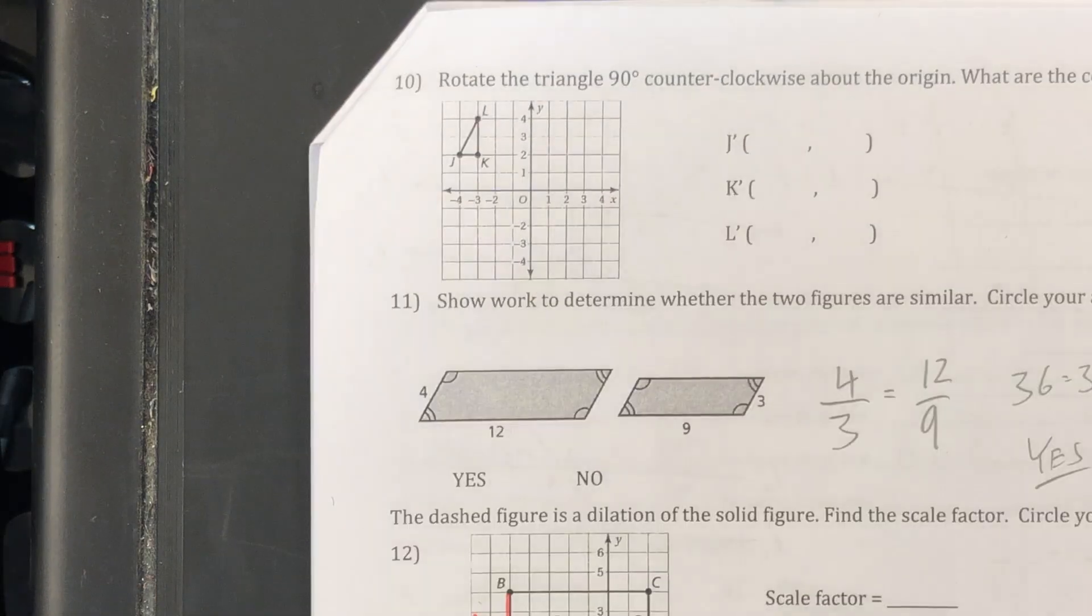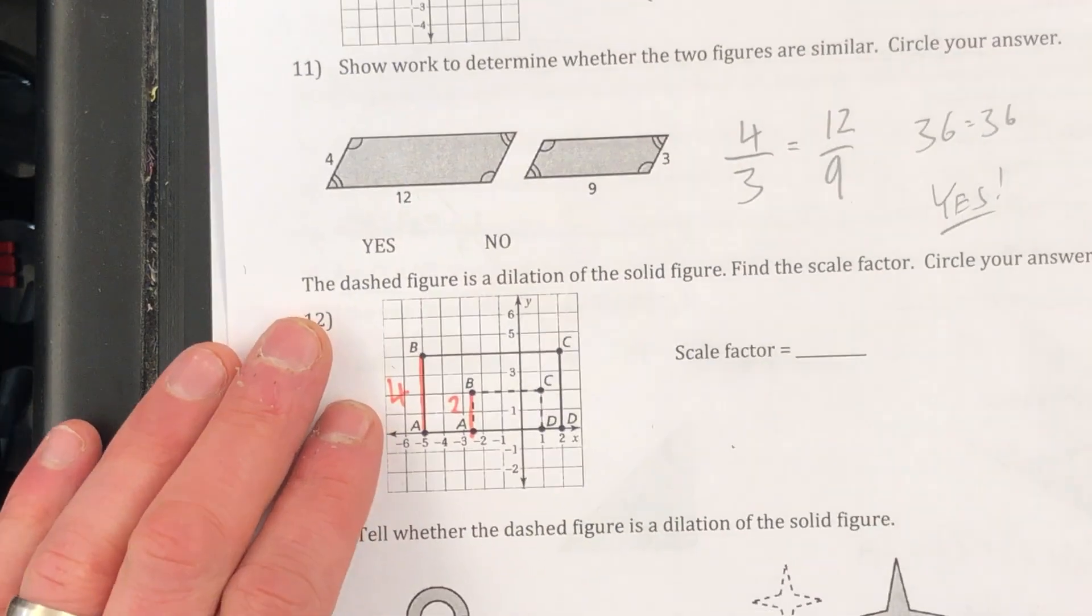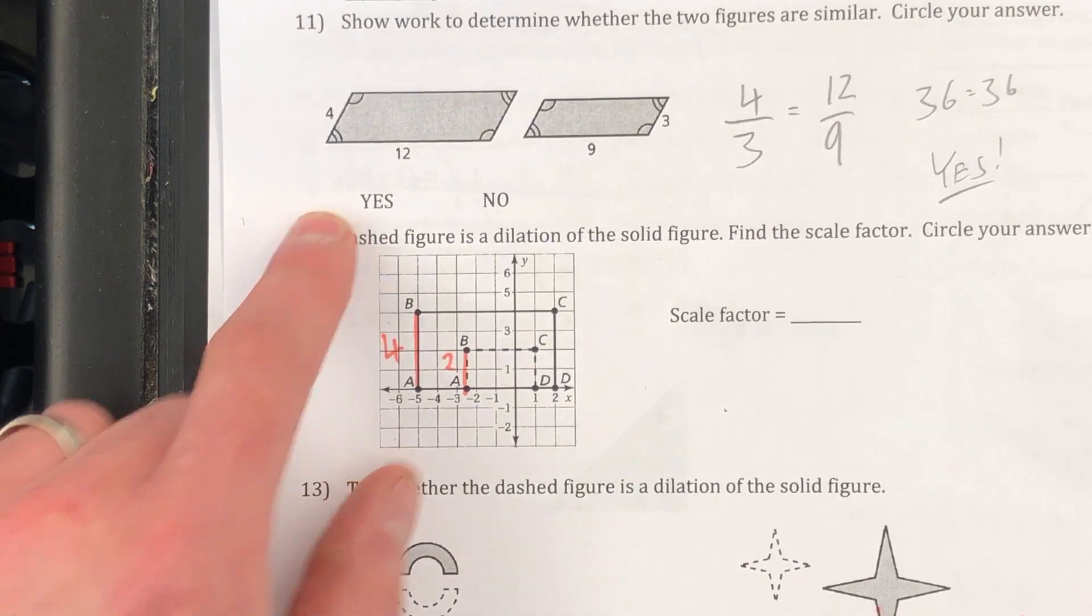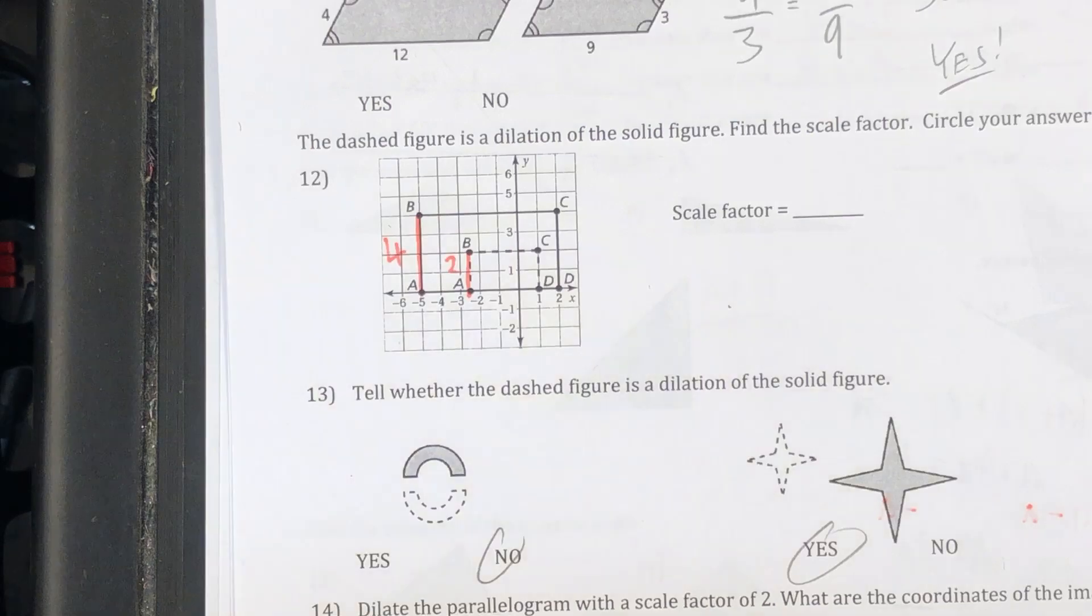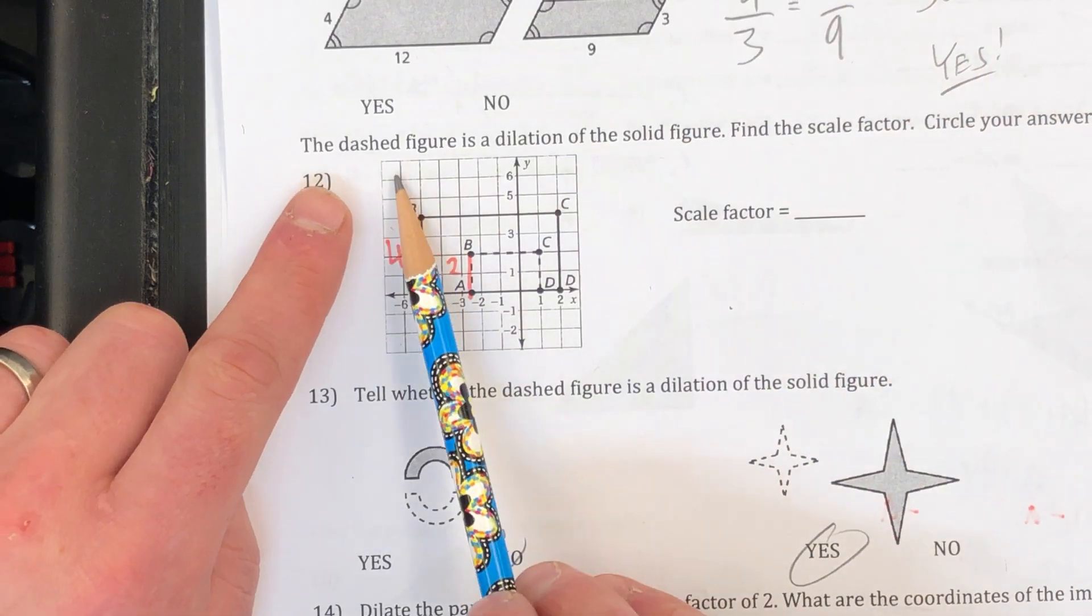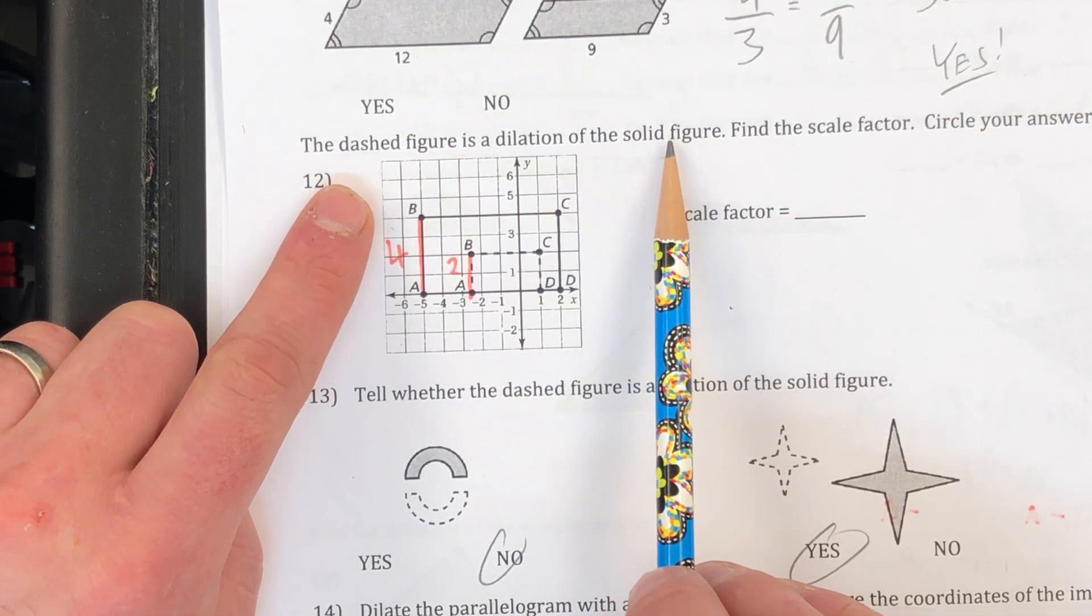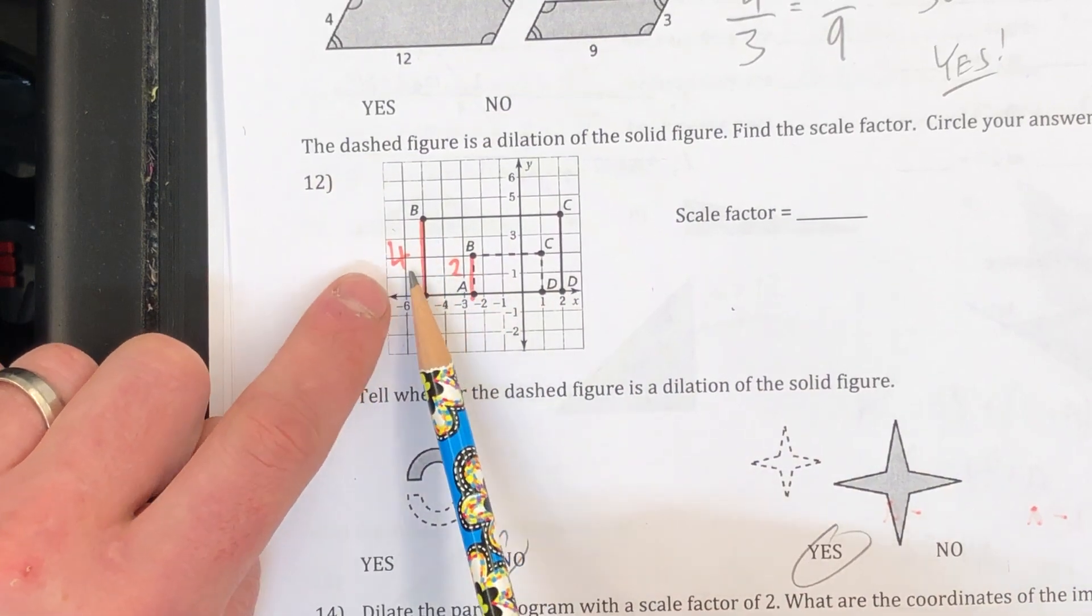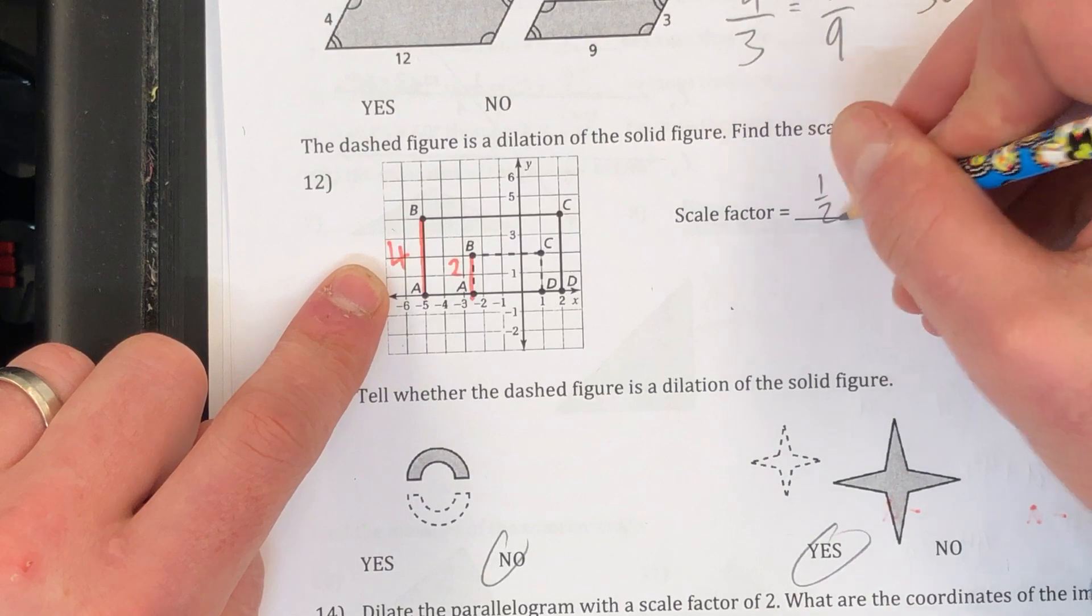Here's a little more chapter 2 for you. Some work for number 11. These are similar figures. There's the work. I set up a proportion. Number 12 is kind of a funny one, finding the scale factor. And it tells me I need to know from the dashed, or the dashed is a dilation of the solid figure. So from the solid figure to the dash, well, it cut in half. So this is a scale factor of 1 half.